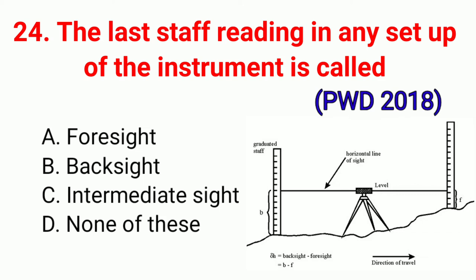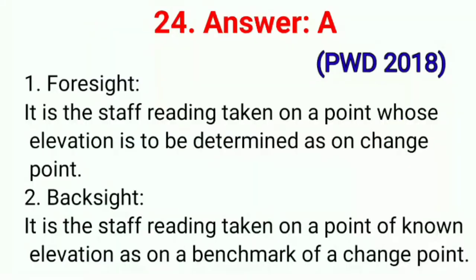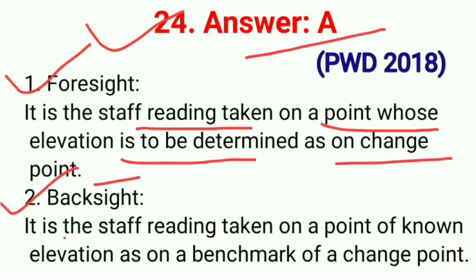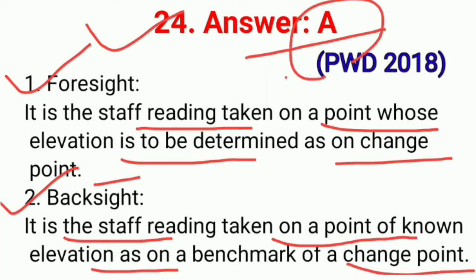Question No. 24. The last staff reading in any setup of instrument is called — correct option A: Foresight. It is the staff reading taken on a point whose elevation is to be determined, as on a change point. Second, Backsight — it is the staff reading taken on a point of known elevation, as on a benchmark or a change point. Correct option A.